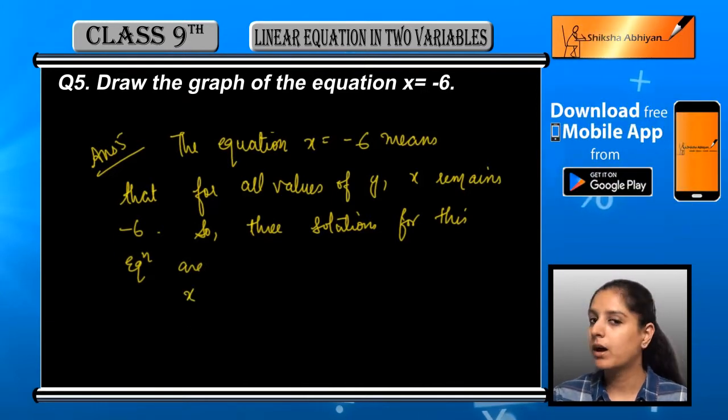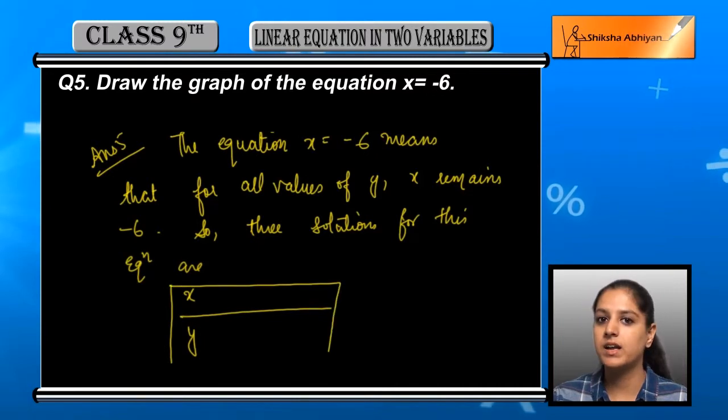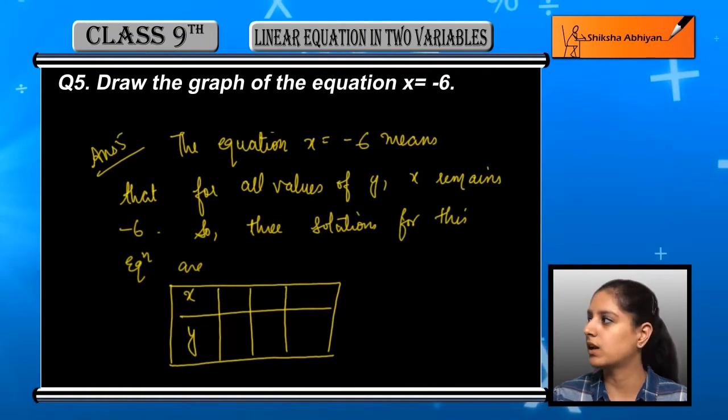So if we make a solution table, we can see that x and y are two values where x is always minus 6, no matter what y's value is. So minus 6, minus 6, minus 6.